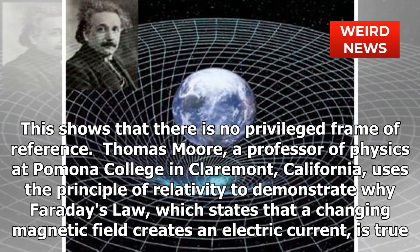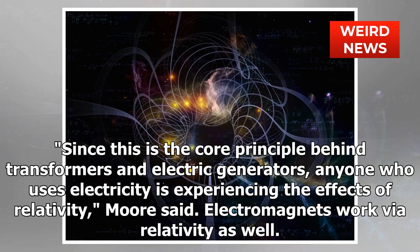This shows that there is no privileged frame of reference. Thomas Moore, a professor of physics at Pomona College in Claremont, California, uses the principle of relativity to demonstrate why Faraday's law — which states that a changing magnetic field creates an electric current — is true. Since this is the core principle behind transformers and electric generators, anyone who uses electricity is experiencing the effects of relativity.